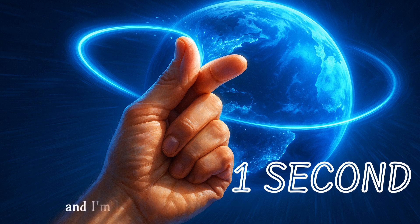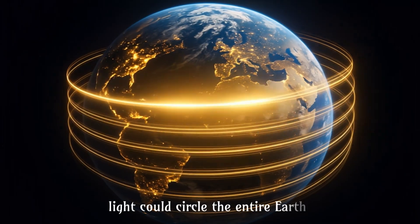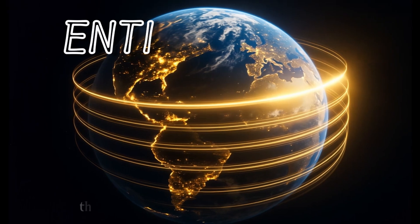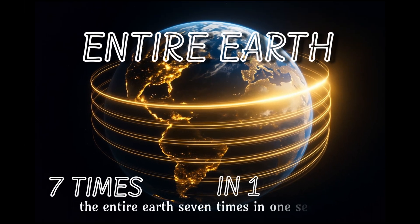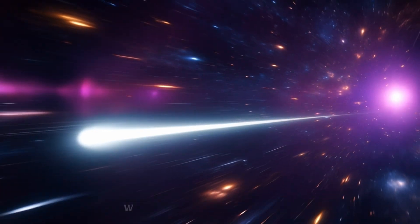In just one second, and I'm literally snapping my fingers right now, light could circle the entire Earth seven and a half times. The entire Earth. Seven times. In one second, if you blinked, light just traveled 300,000 kilometers while your eyes were closed.